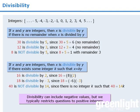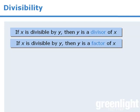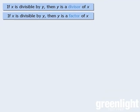Alright, now let's examine some more definitions. If x is divisible by y, then we can say that y is a divisor of x. Or if x is divisible by y, we can say that y is a factor of x. The terms divisor and factor mean the same thing, so we'll use these two terms interchangeably.